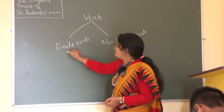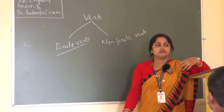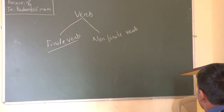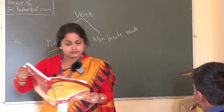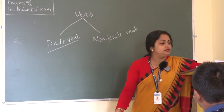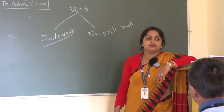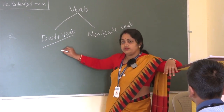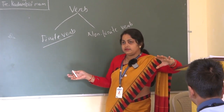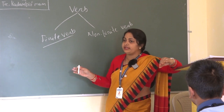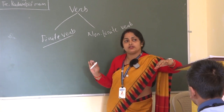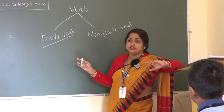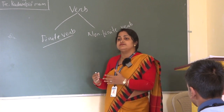So, today we will learn about another type of classification of verb — that is finite and non-finite. Finite verb and non-finite verb. So, first you tell me what is finite verb. You know subject-verb agreement means the verb will take the person or the number or the tense according to the subject, and the verb will also change its form.